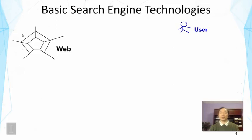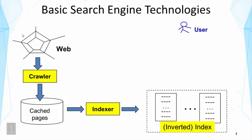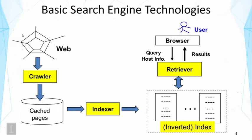Here is a picture showing the basic search engine technologies. The web is on the left and the user is on the right, and we help users access web information. The first component is a crawler that crawls pages. The second component is an indexer that takes those pages to create an inverted index. The third component is a retriever that uses the inverted index to answer a user's query, with search results returned to the user's browser.